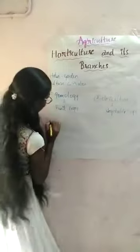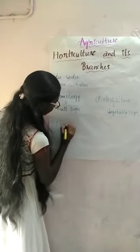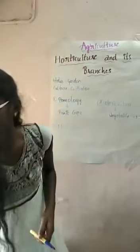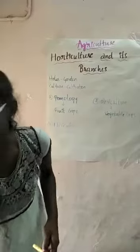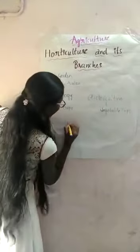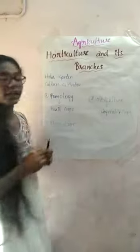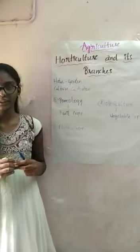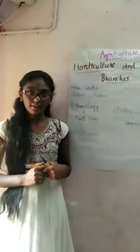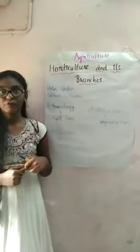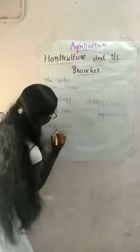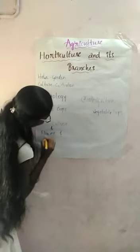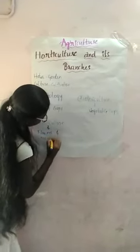The third branch is floriculture. Floriculture is derived from the Latin word — flores means flowers. Floriculture means cultivation of flores and ornamental plants and ornamental crops.